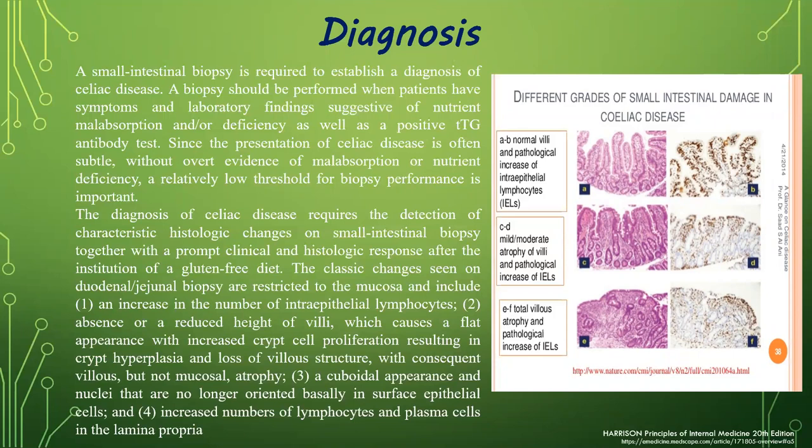The classic changes seen on duodenal biopsy are restricted to the mucosa and include: an increased number of intraepithelial lymphocytes; absence or reduced height of the villi, which can cause a flat appearance with increased crypt cell proliferation resulting in crypt hyperplasia and loss of villous structure; a cuboidal appearance with nuclei that are no longer basally oriented in the surface epithelial cells; and increased numbers of lymphocytes and plasma cells in the lamina propria.